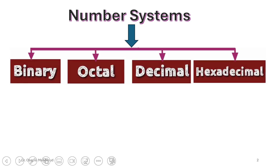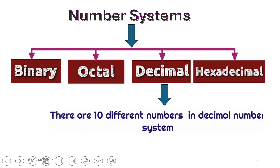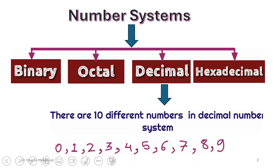We know we use numbers from 0 to 9 in writing any number in our daily basis. This is what we call the decimal. The decimal has 10 numbers from 0 to 9, so the base is 10 for the decimal.